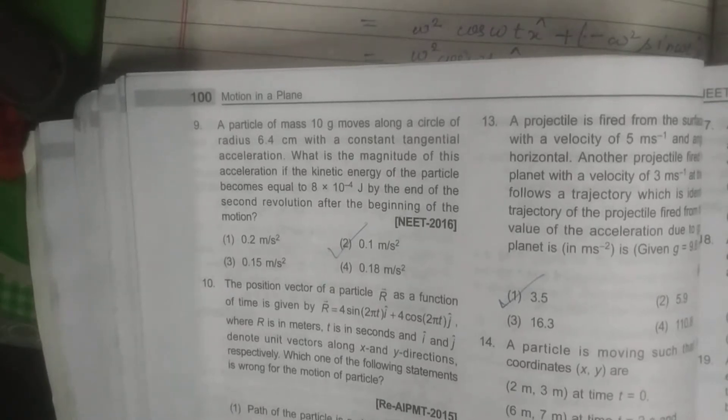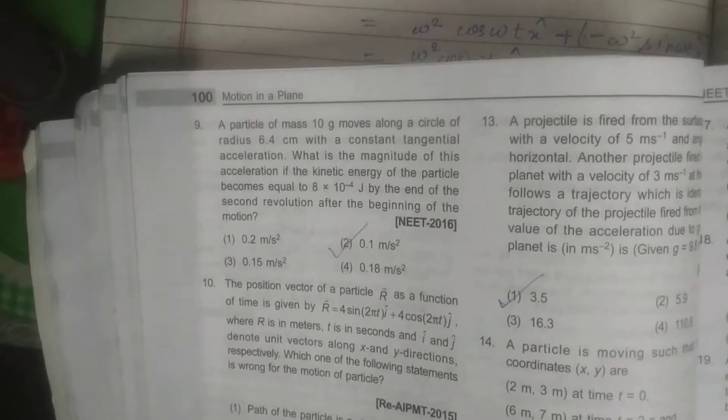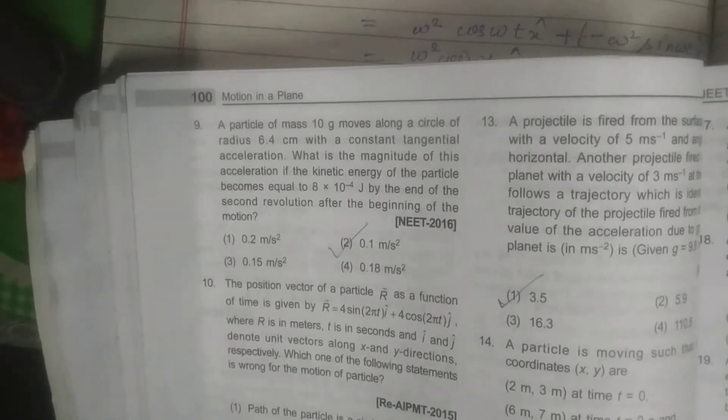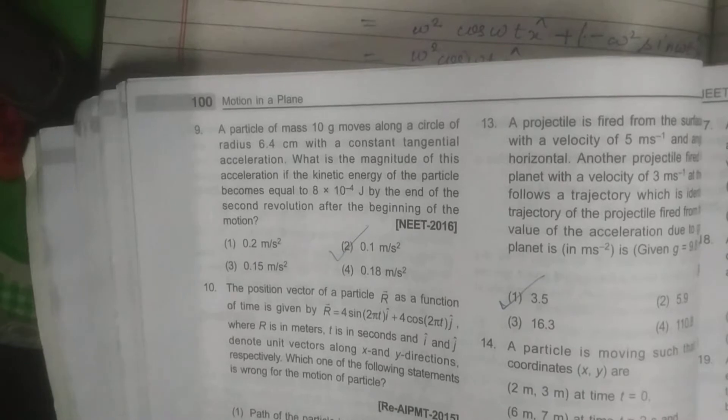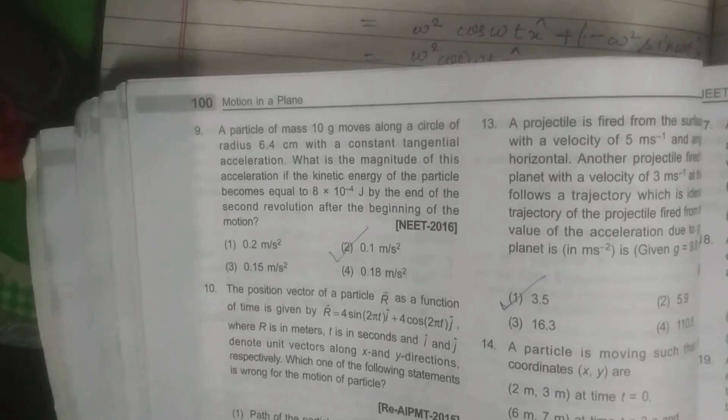What is the magnitude of this acceleration if the kinetic energy of the particle becomes equal to 8 into 10 to the power minus 4 Joule by the end of the second revolution after the beginning of the motion.